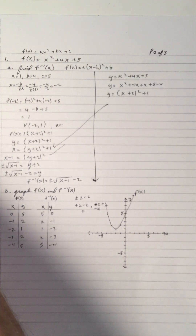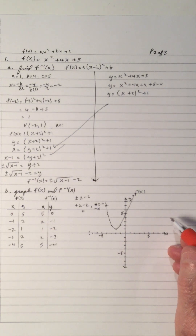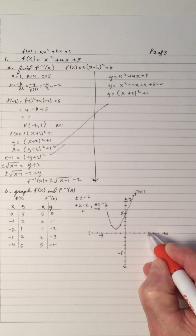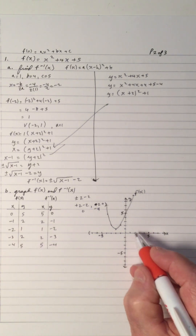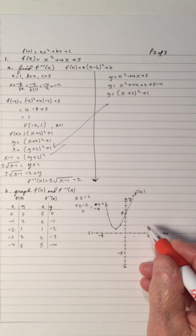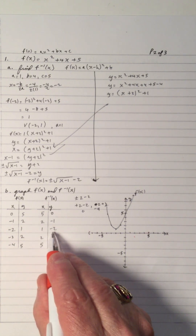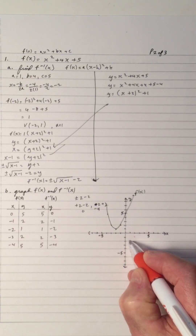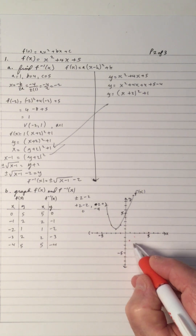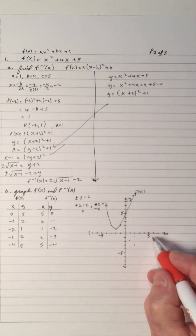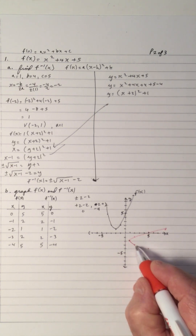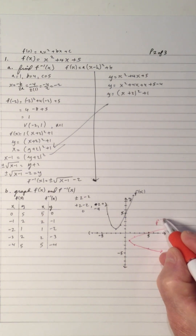So what I'm going to do now is take the red marker and do its inverse. So the inverse of this one: 0, 5 becomes 5, 0. 2, negative 1 becomes 2, negative 1. The vertex 1, negative 2. 2, negative 3. And 5, negative 4. So this is f to the negative 1 — it's the inverse.